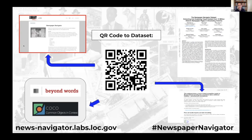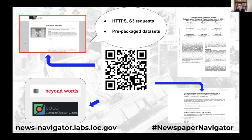For accessing the dataset, you can find it at news-navigator.labs.loc.gov. There you can query the dataset computationally using S3 requests, and we've also made hundreds of pre-packaged datasets — for example, you can download all the maps from 1872 or all the photos from 1921 in a zip folder, along with all metadata in JSON or CSV form.